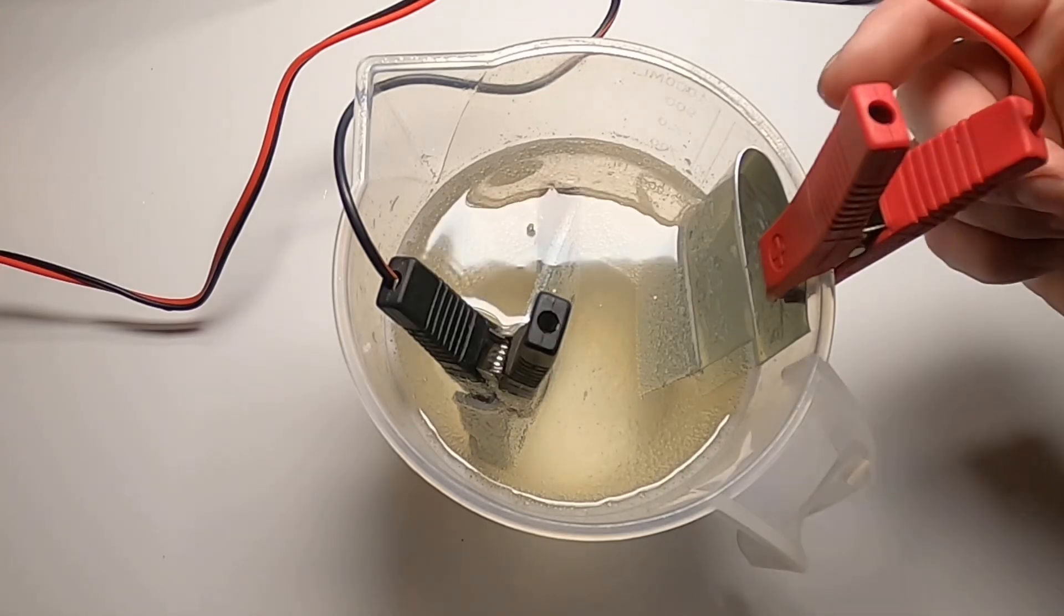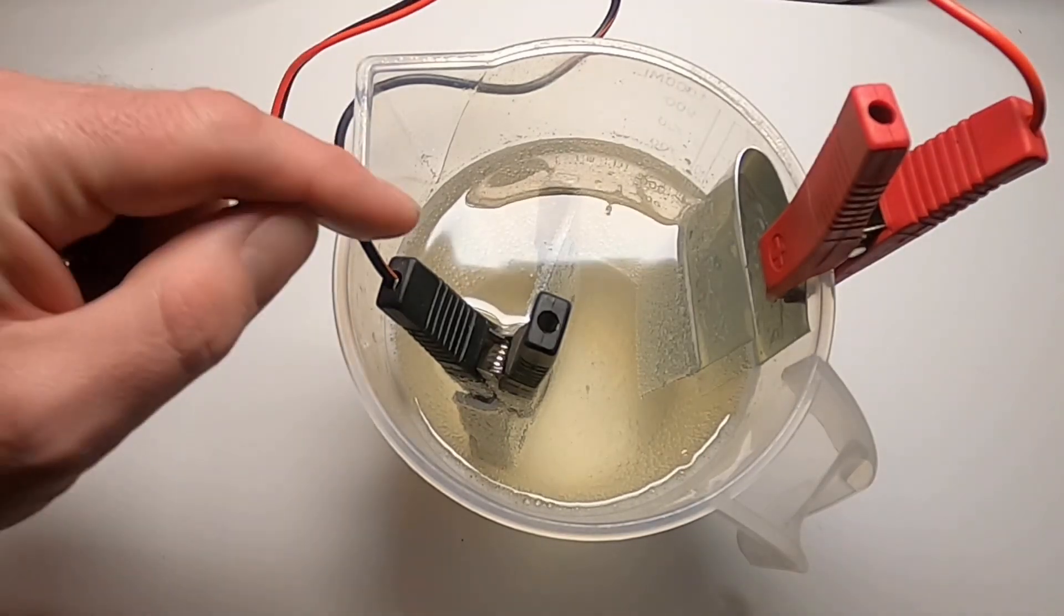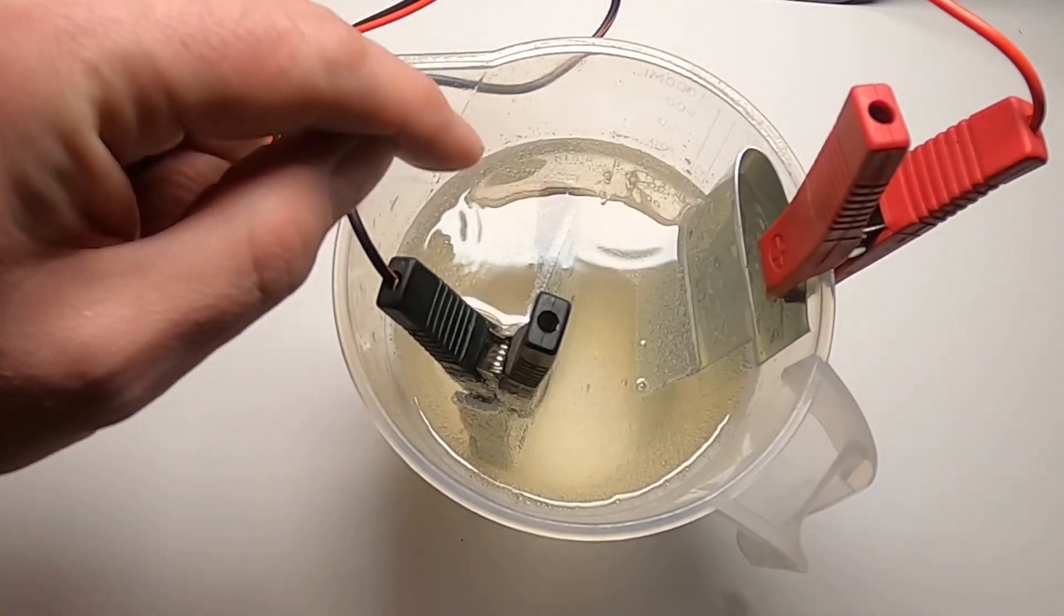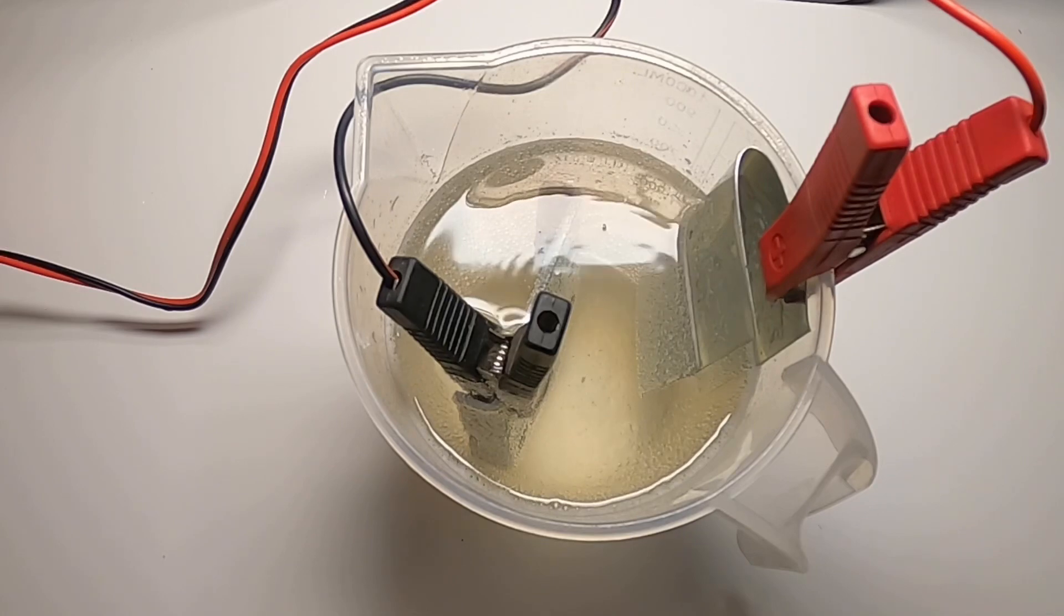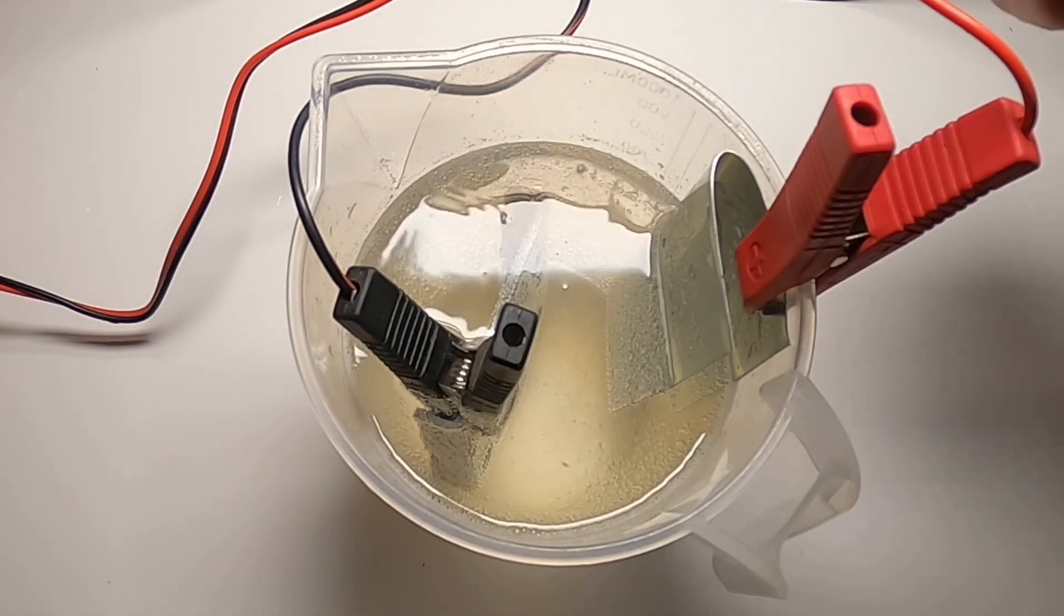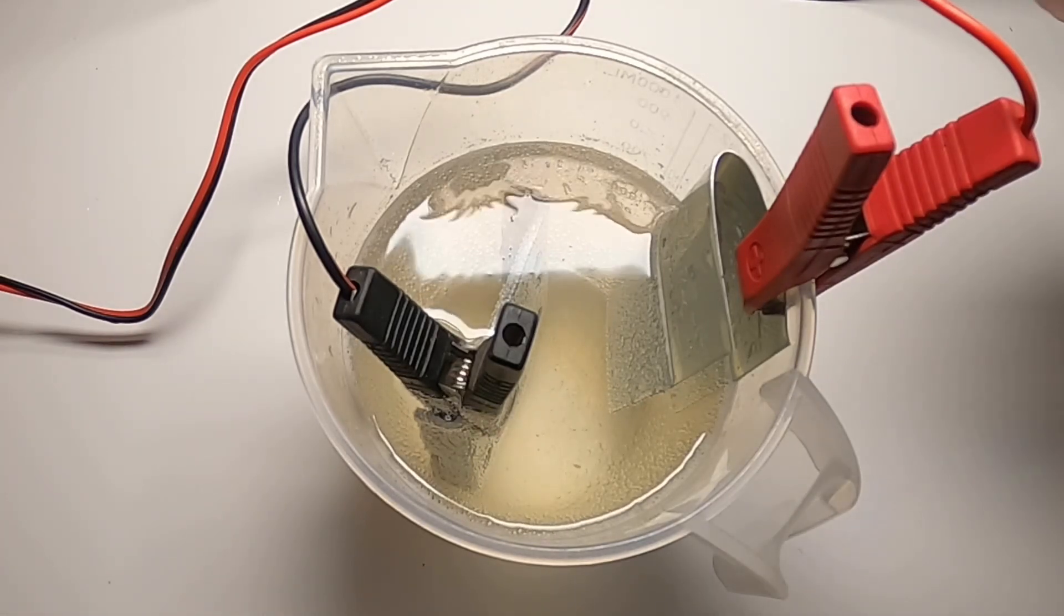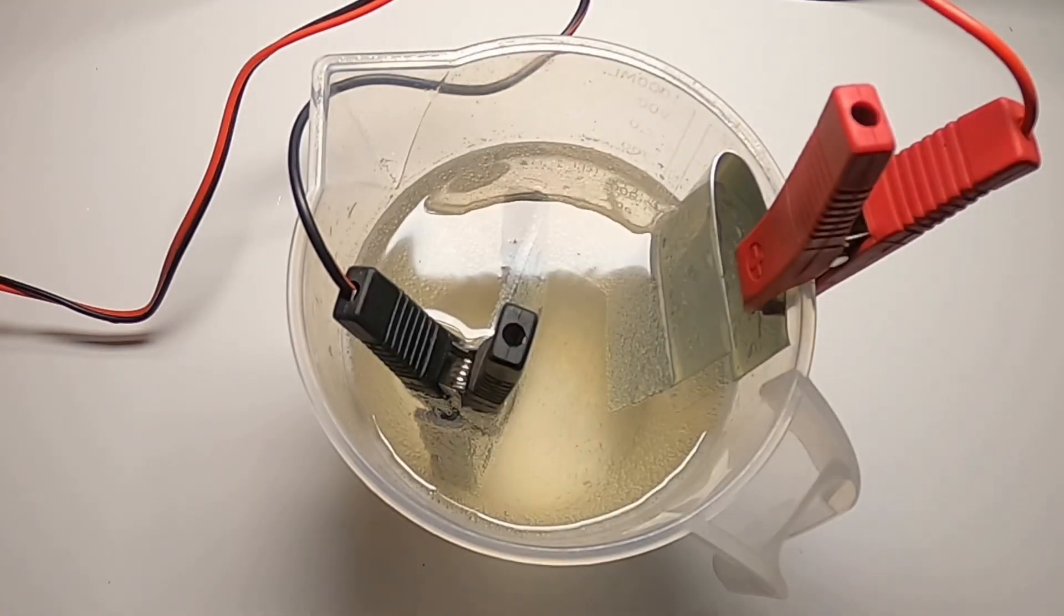Now we have the zinc anode attached to the power source on the positive side. And the cathode, that being the metal part that we want to zinc plate, is attached to the negative side of the power source. The electricity will flow through the solution, taking the zinc ions from the anode to the plate that we want to be zinc plated.